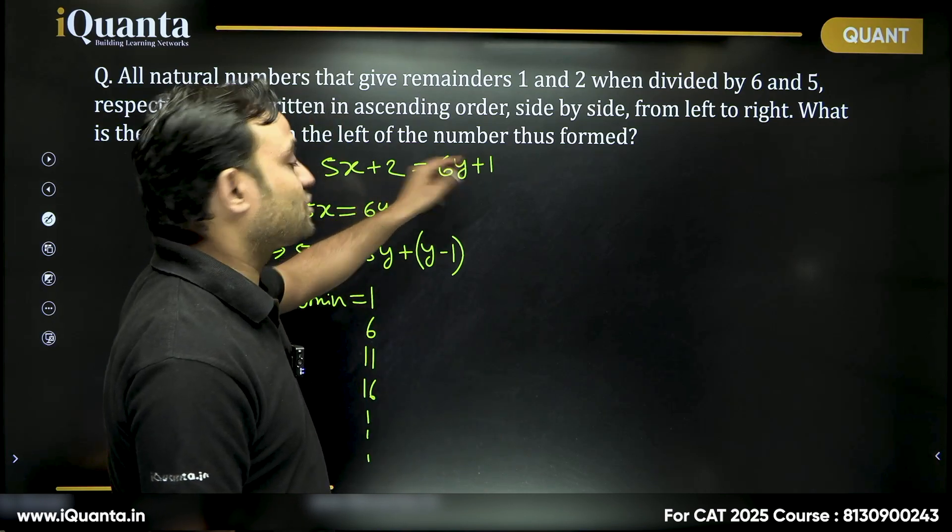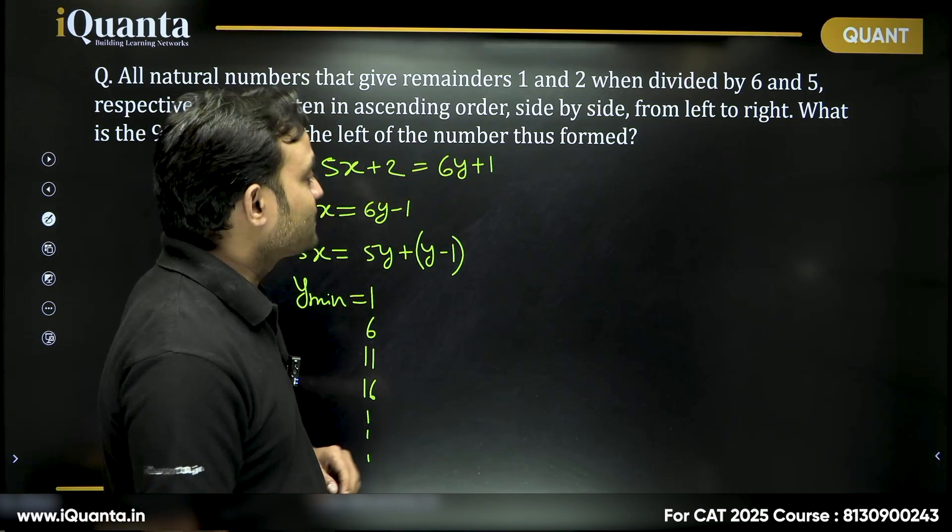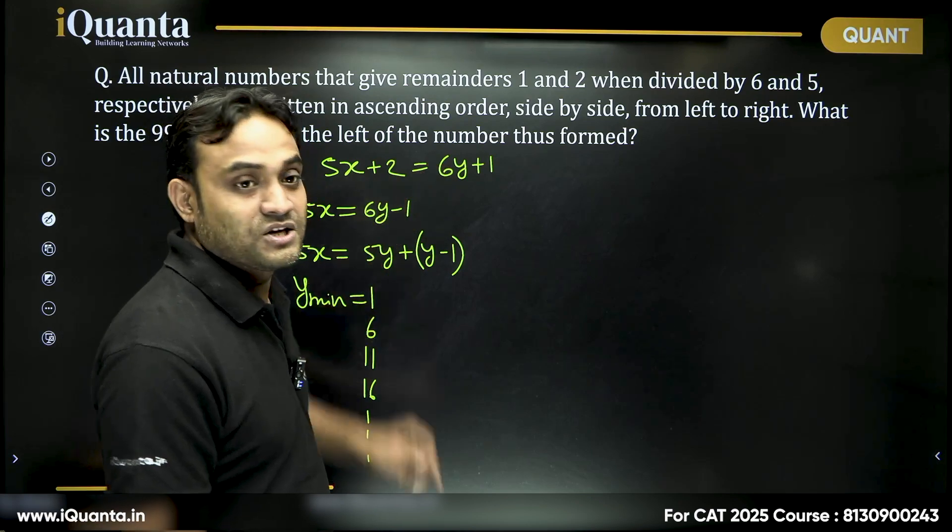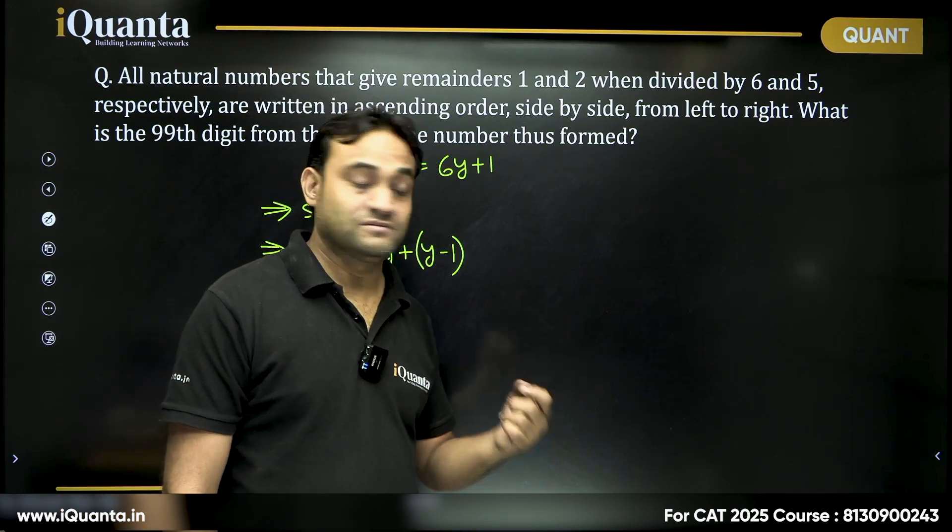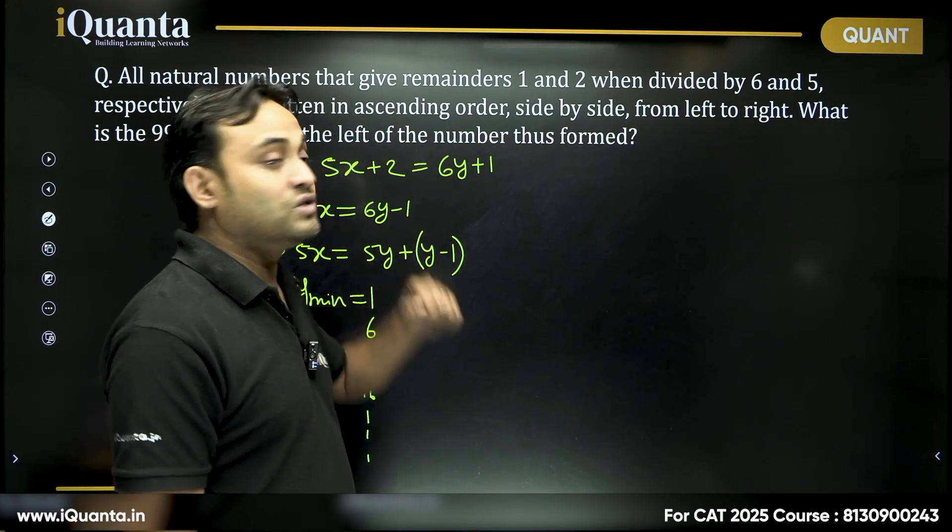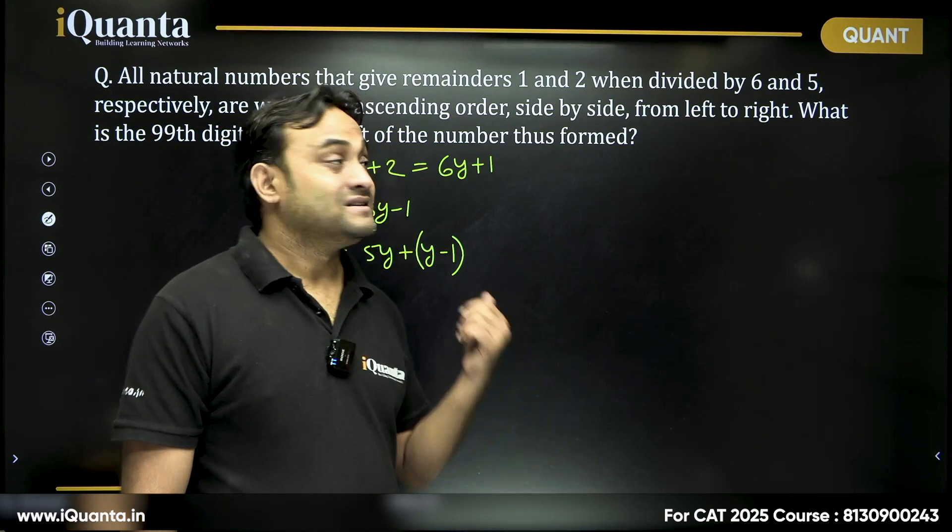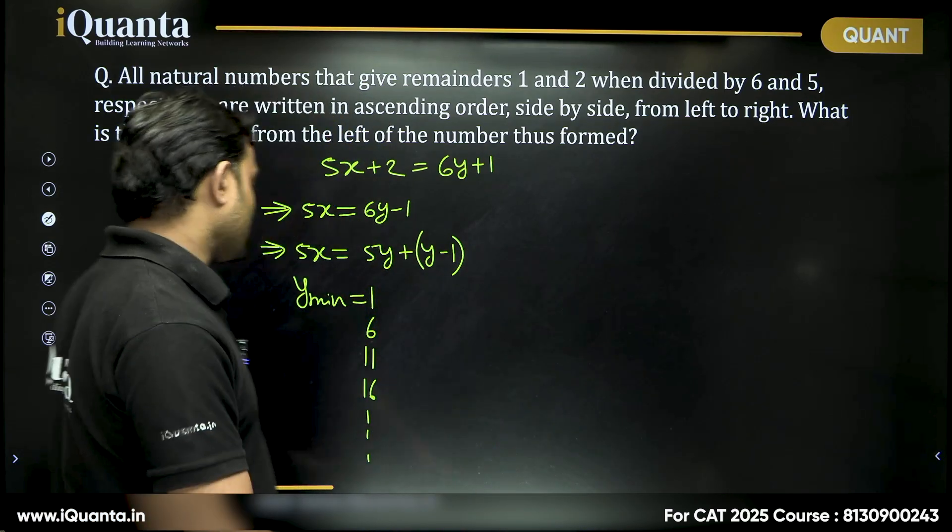Now if you take y equals 1, you are getting 7. If you take y equals 6, you are getting 37, 36. Then again, if you are taking y equals 11, you are getting 6 plus 1, 67. What are these values?